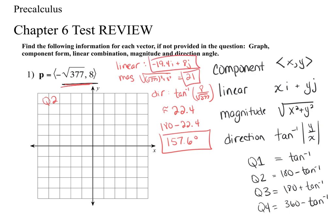After finding the three values, you need to graph the vector. If you have component form, start at the origin (0,0) and graph from there. Go left 19 and up 8 — so about negative 19 on the x-axis and positive 8 on the y-axis. If they give you initial and terminal points, graph those exactly.